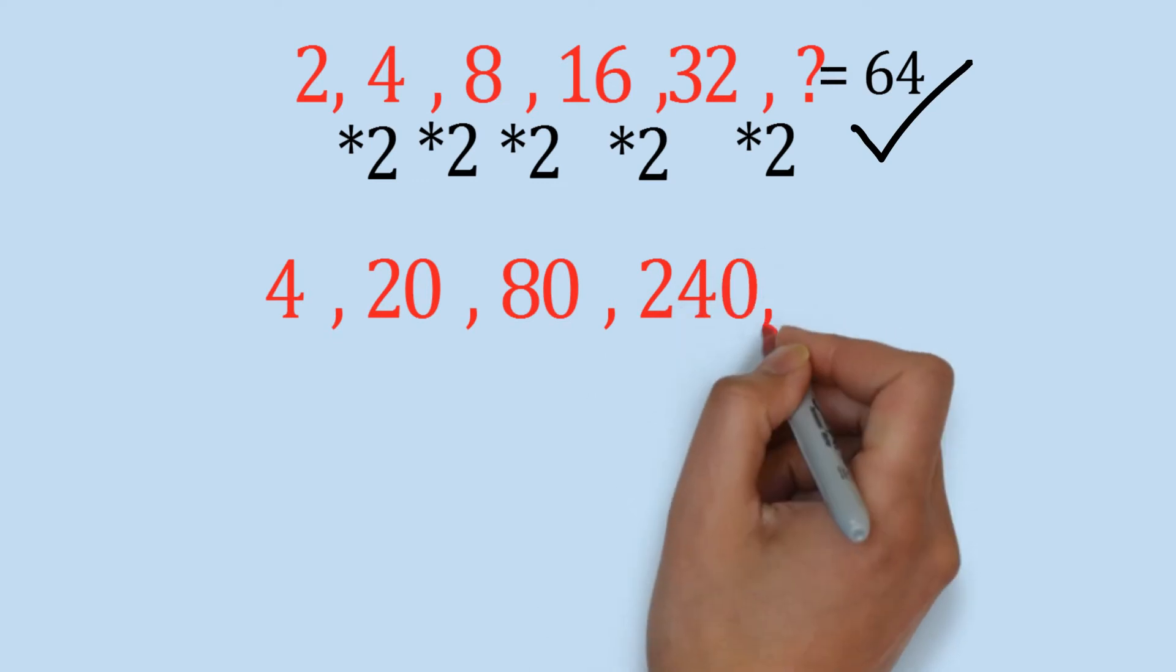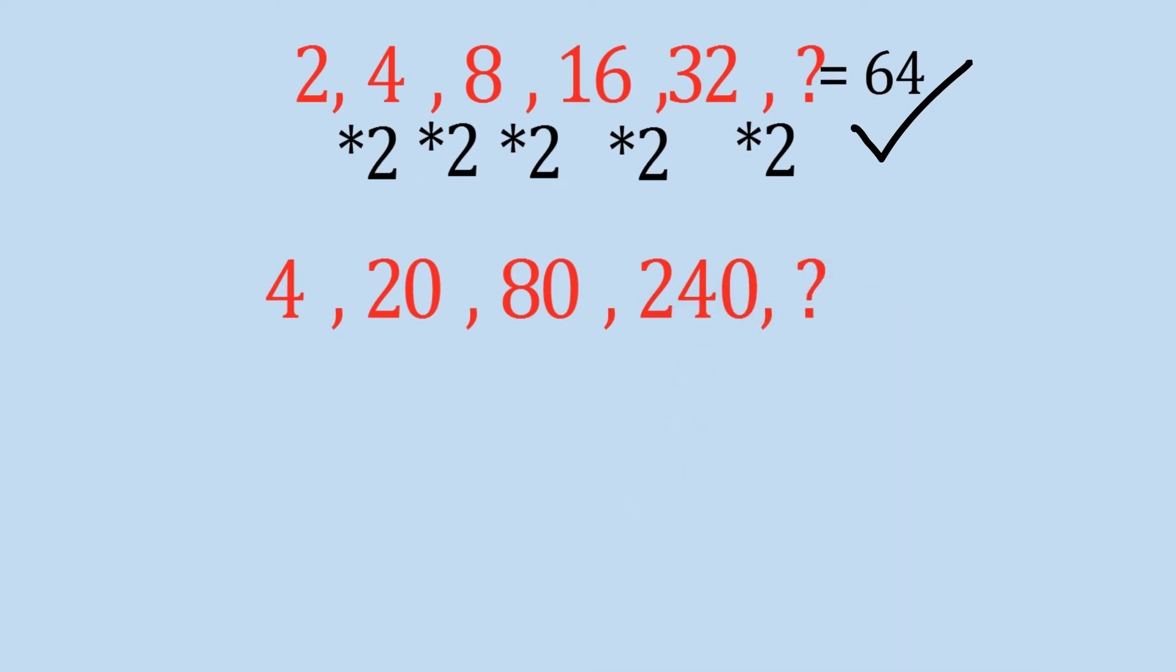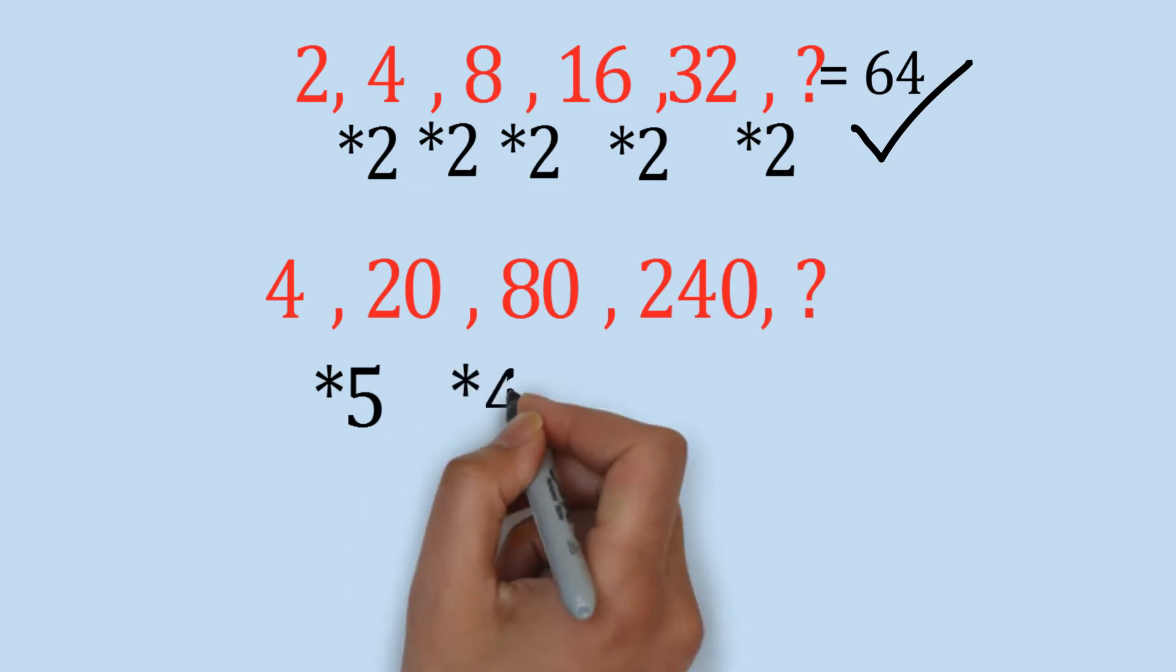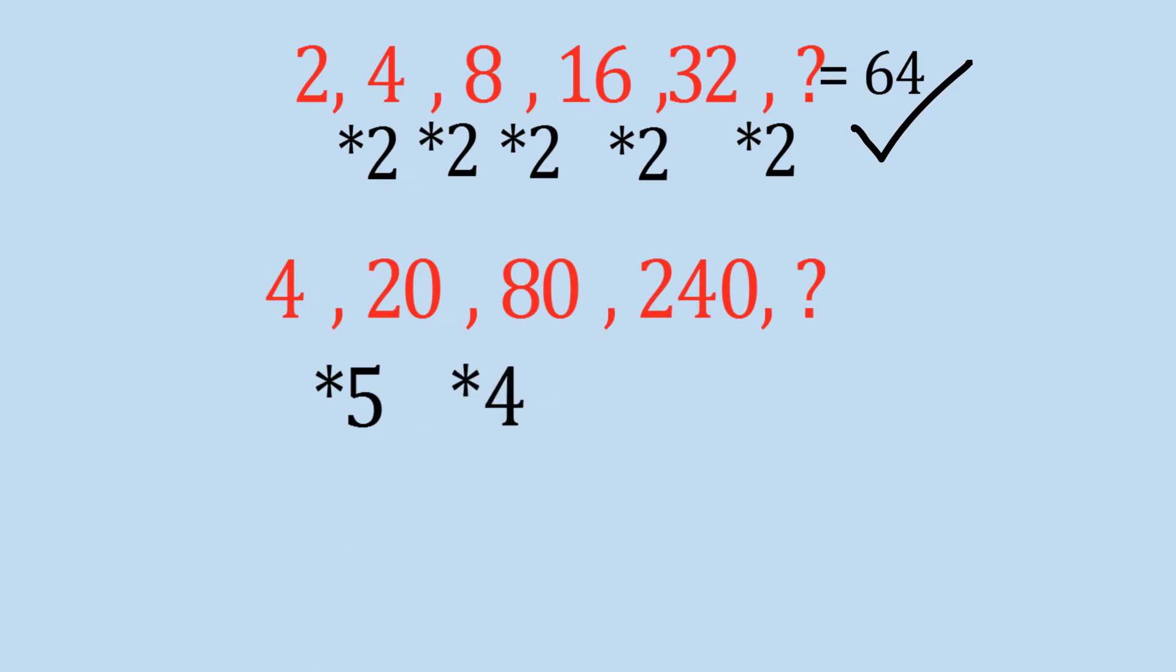So next series we see 4, 20, 80, 240. If you see, 4 into 5 is 20, 20 into 4 is 80, 80 into 3 is 240. So clearly we are seeing a decreasing product. These are the variations you see in the product series.